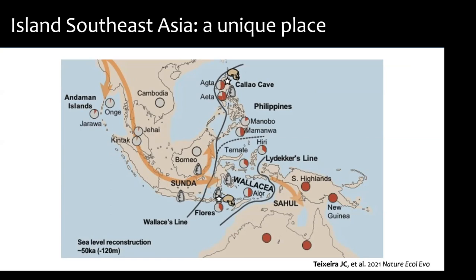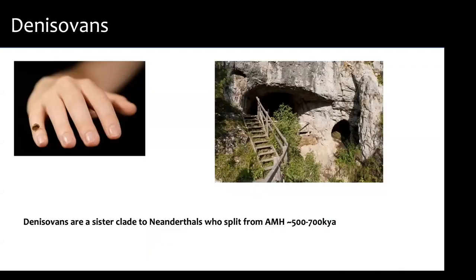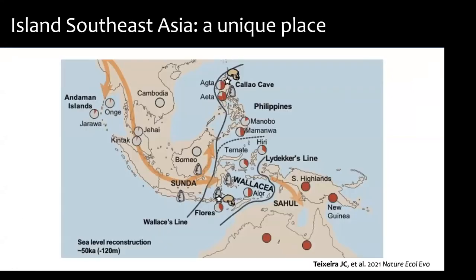Beyond the biogeography and human presence, we have genetic evidence for the largest proportion of Denisovan ancestry anywhere in the world in populations living precisely east of Wallace's Line. The problem is that Denisovans were first and solely described based on a small fragment of a pinky finger found in Denisova Cave in Siberia — that's the only direct evidence. There's a potential mandible in Tibet, but direct genetic evidence comes only from that Siberian fossil.